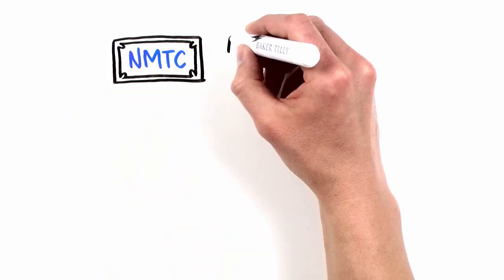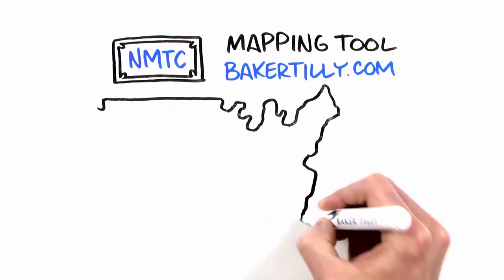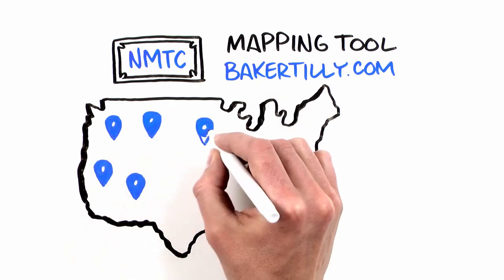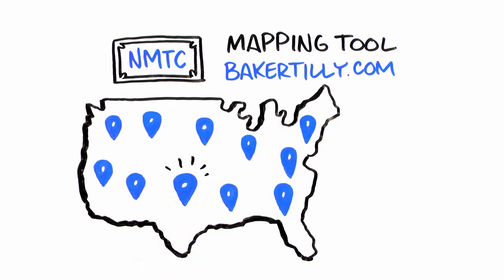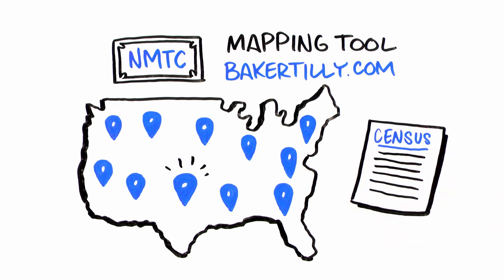Using the NMTC mapping tool on bakertilly.com, you can easily locate qualifying areas to determine if your project is eligible. These areas are located throughout the United States and are determined by Census tract data.